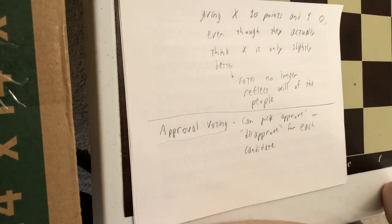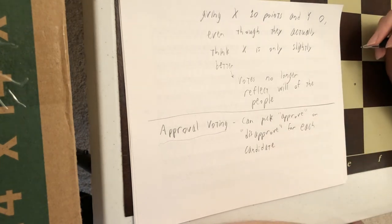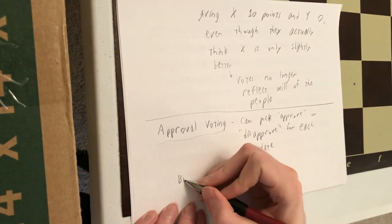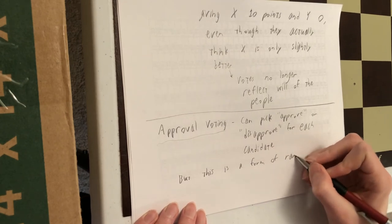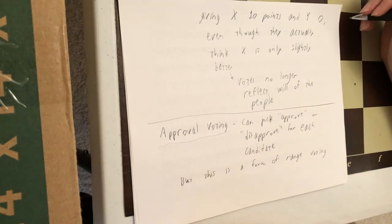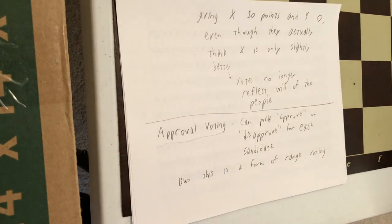The problem though here is that approval voting is just a special case of range voting. So approve is like giving them 10 points, and disapprove is like giving zero points. So all the same problems of range voting apply to approval voting. So you still get strategic voting, and when you get strategic voting, then the overall outcome might or might not be the will of the people. So you don't have that assurance. So why do we keep seeing this issue of strategic voting that comes up in both approval voting and in range voting and also in plurality rule? It turns out there's a theorem behind it.